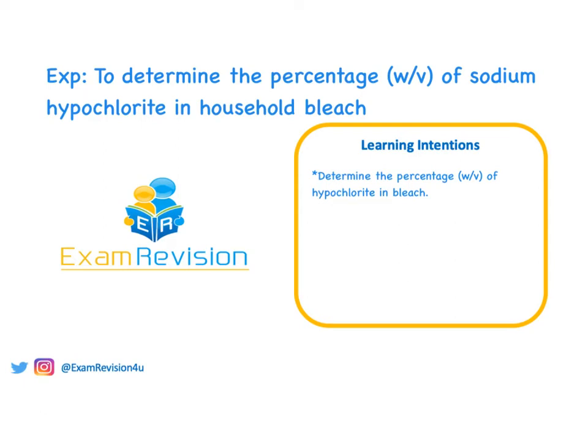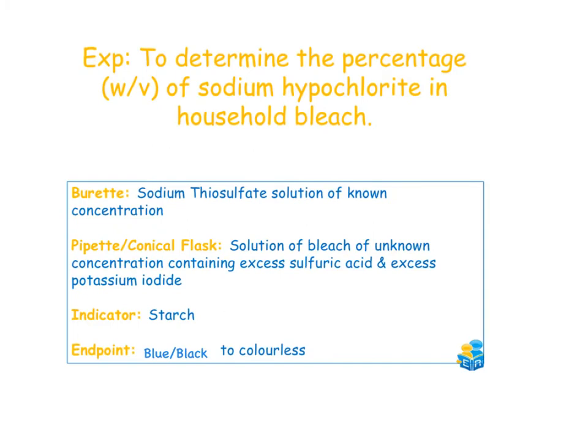In this video we're going to look at another oxidation-reduction titration and determine the percentage by volume of sodium hypochlorite present in household bleach. In the burette we're going to have a sodium thiosulfate solution of known concentration. In the pipette and conical flask we're going to have a bleach solution of unknown concentration containing excess sulfuric acid and excess potassium iodide.